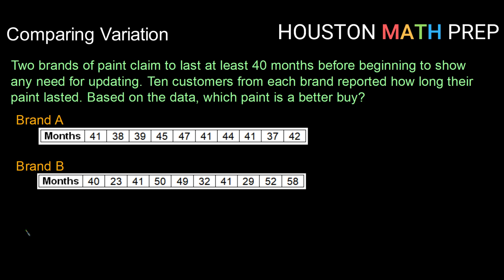So here's our setup. Two brands of paint claim to last at least 40 months before beginning to show any need for updating. Ten customers from each brand reported how long their paint lasted. Can we use this data to determine which paint might be the better buy? So we have in months 10 data points for brand A and 10 data points about brand B.